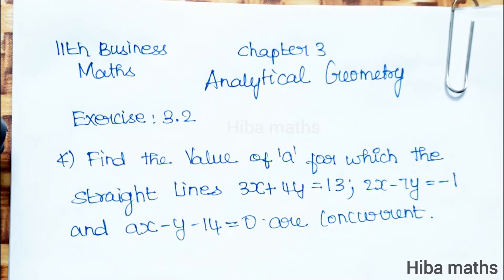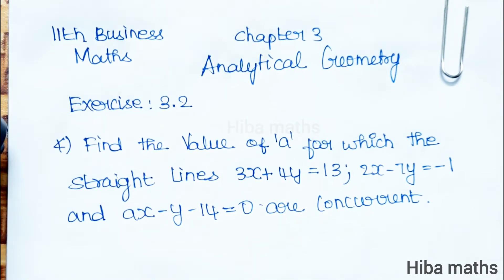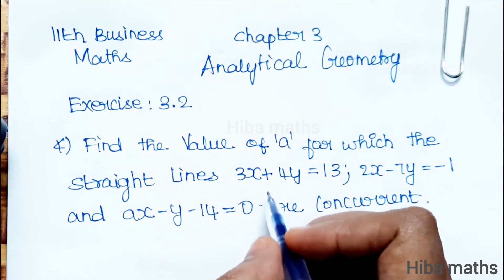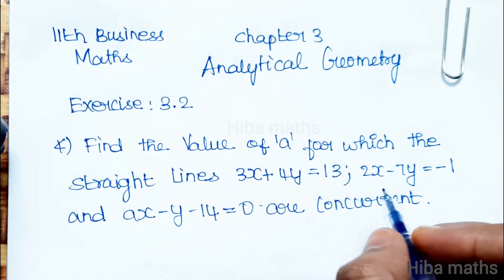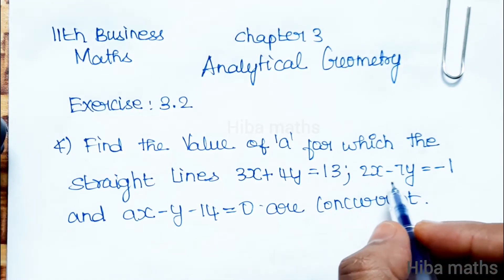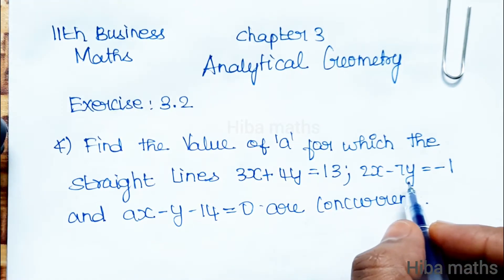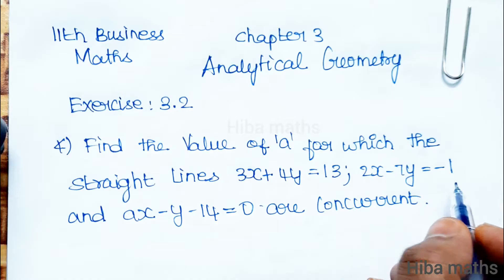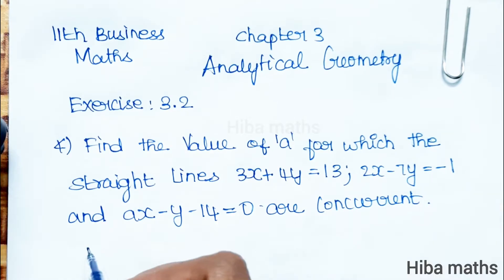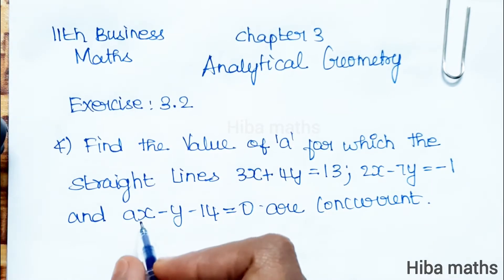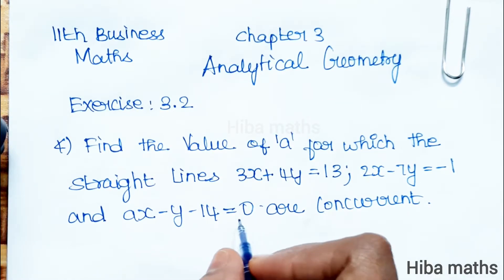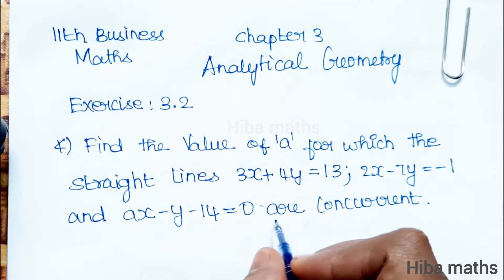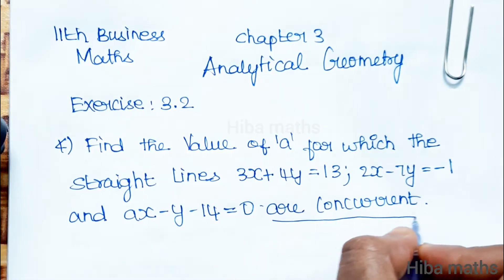Find the value of A for which the straight lines 3x plus 4y is equal to 13, 2x minus 7y is equal to minus 1, and ax minus y minus 14 is equal to 0 are concurrent.